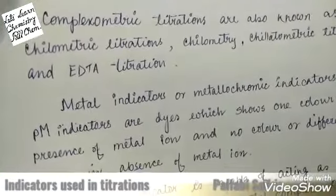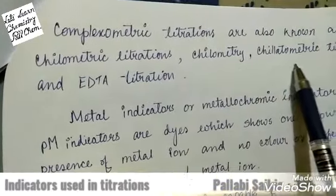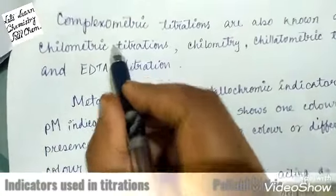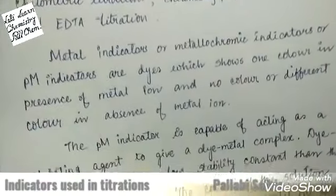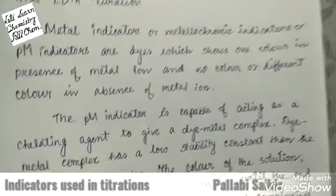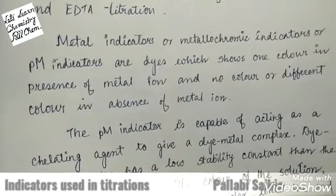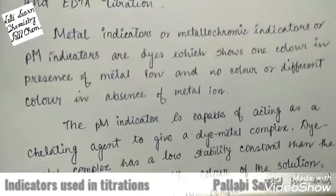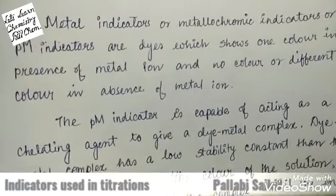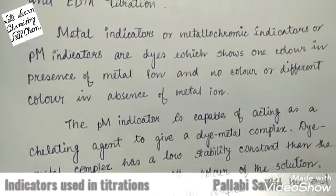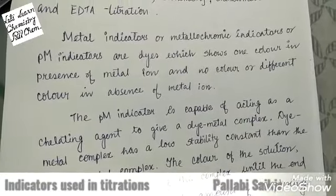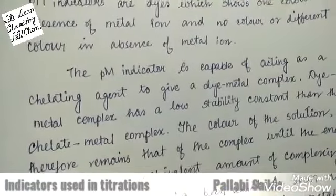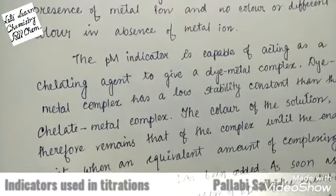Complexometric titrations are also called chelatometric titrations or EDTA titrations, because the ligand normally used for chelate formation is EDTA. The metal indicator used are dyes which show one color in the presence of the metal ion and a different color in the absence of that metal ion. The metal indicator is bonded with the metal, and the stability constant of that metal-indicator complex is very low compared to the metal-ligand complex. So when a ligand is added, the metal-indicator bond is broken and the ligand forms a complex with the metal.